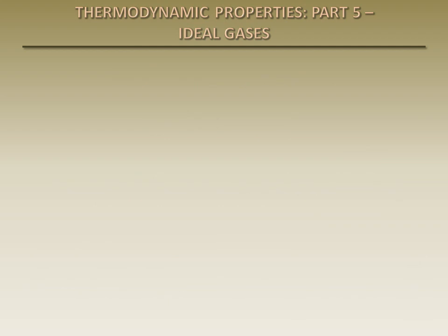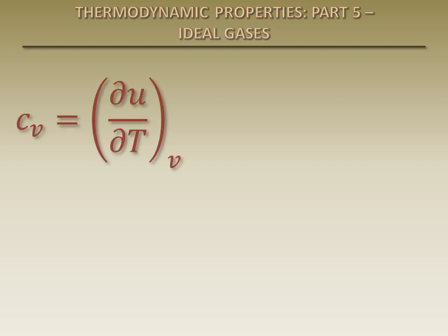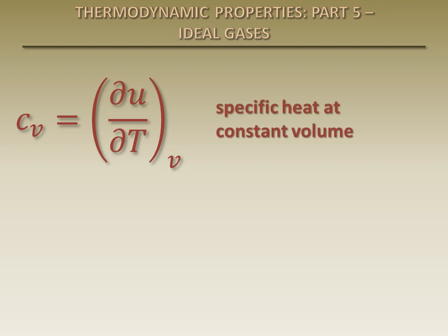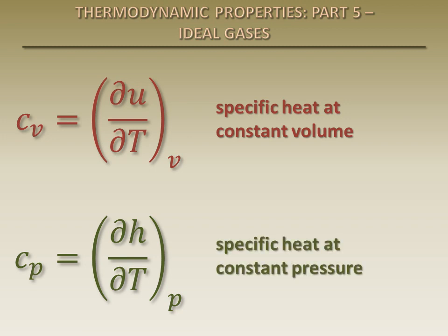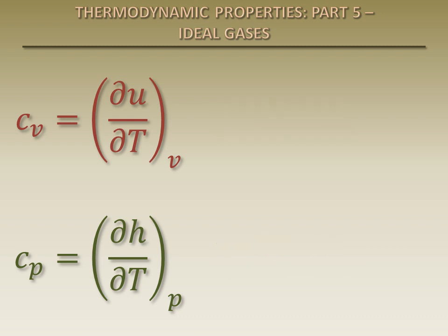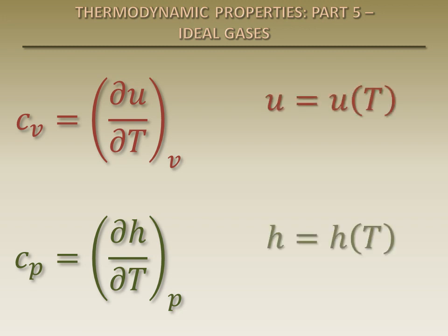We will now learn how to determine changes in internal energy and enthalpy of ideal gases. Recall that the specific heat at constant volume can be expressed as the derivative of the specific internal energy with respect to temperature. Similarly, the specific heat at constant pressure can be expressed as the derivative of the specific enthalpy with respect to temperature. It has been shown experimentally and mathematically that for ideal gases, the internal energy and enthalpy are functions of temperature only.